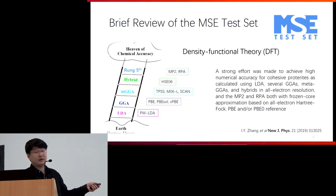Another key feature of our test set is that we spent considerable effort to achieve high numerical accuracy for cohesive energy properties calculated using LDA, several GGAs, meta-GGAs, and hybrids in all-electron resolution, and MP2 and RPA both with frozen core approximation based on all-electron reference Hartree-Fock, PBE, and PBE0 references.